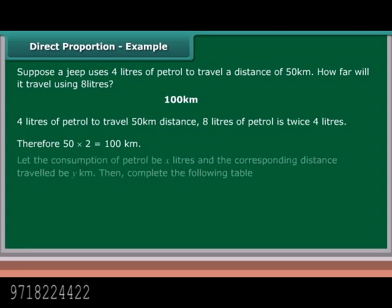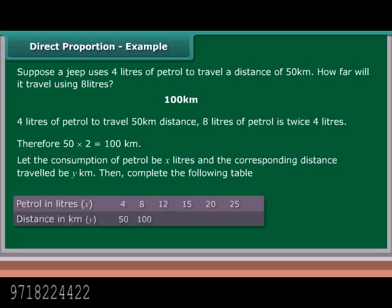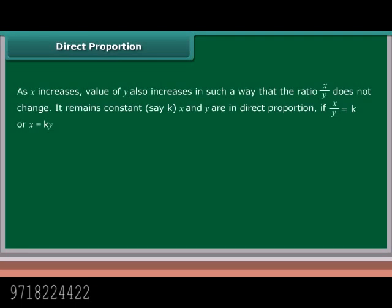Let the consumption of petrol be X liters and the corresponding distance traveled be Y kilometers. Complete the following table. Direct proportion: as X increases, the value of Y also increases in such a way that the ratio X upon Y does not change — it remains constant, say K. X and Y are in direct proportion if X/Y = K, or X = KY.